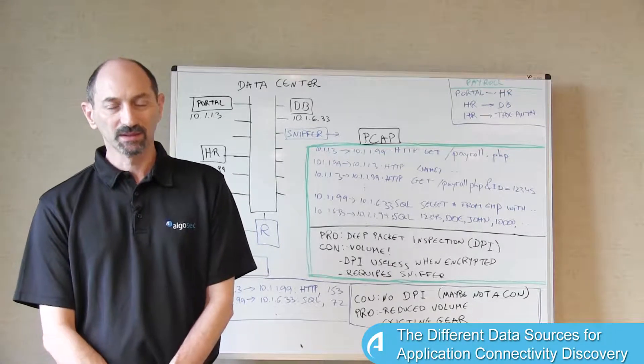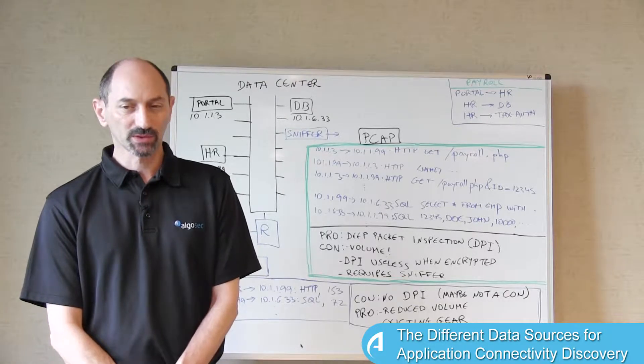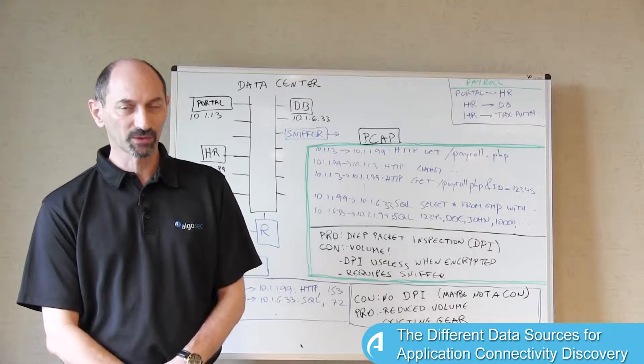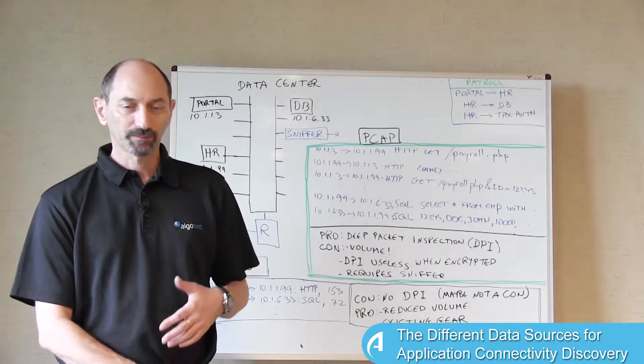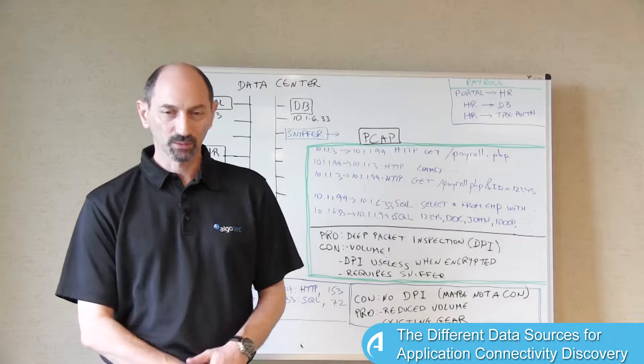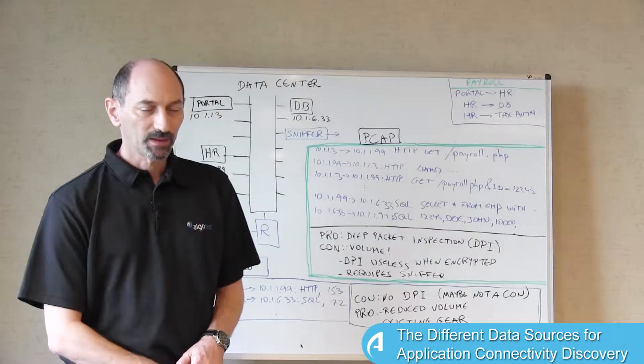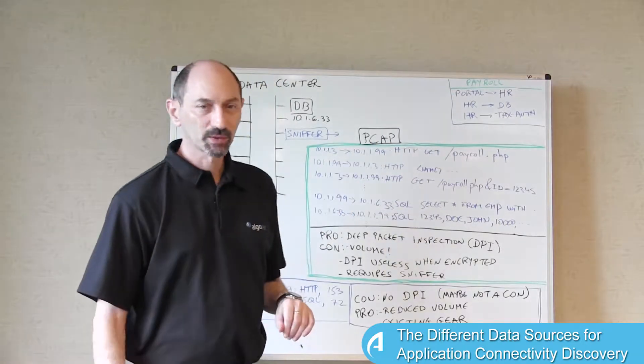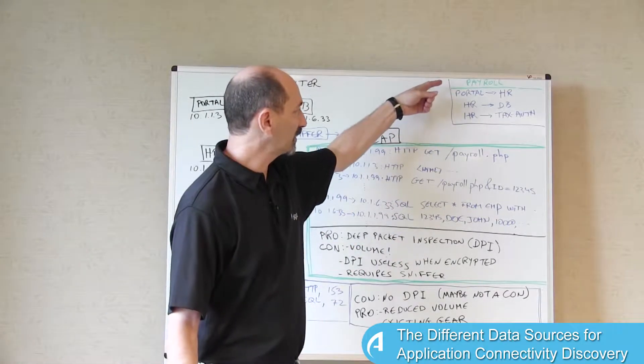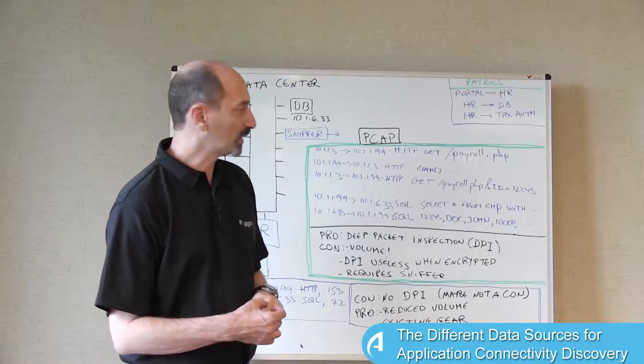In a previous lesson, we talked about a situation where we're trying to discover business applications in the data center, and we're trying to do that from network traffic that we are recording. Our goal is to arrive at a high-level description of the application using its name and the flows that it relies on.